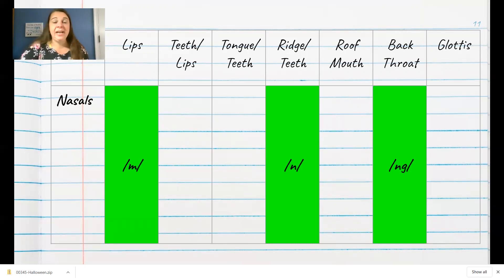We call these cousin sounds. They're not as close as brothers. We don't have the voiced and unvoiced, but they're all made in the same way, pushing that air through the nose.